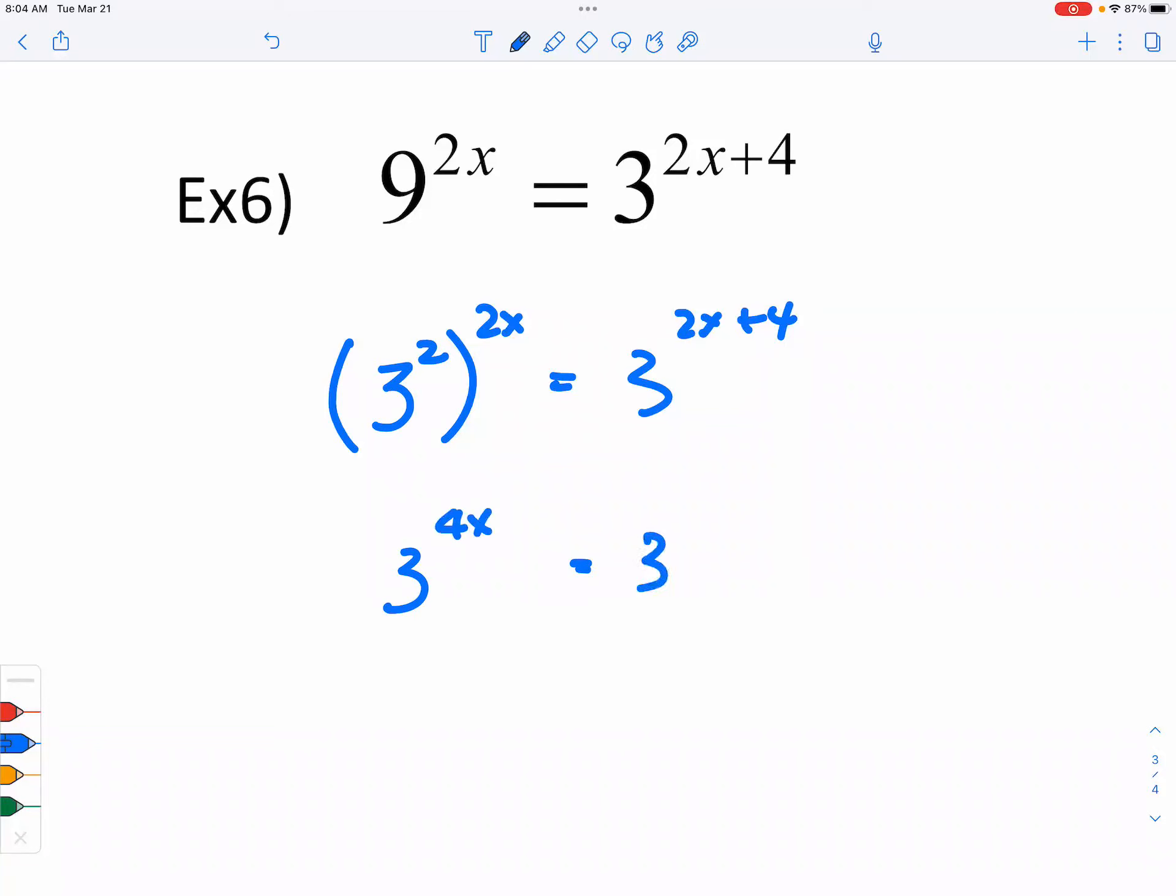And on the right it is 3 to the 2x plus 4. So your challenge in the near future is that you are going to make the numbers share the same base. Because once they have the same base, you can make an argument and say, well, if the bases are the same, then the exponents would have to be the same.